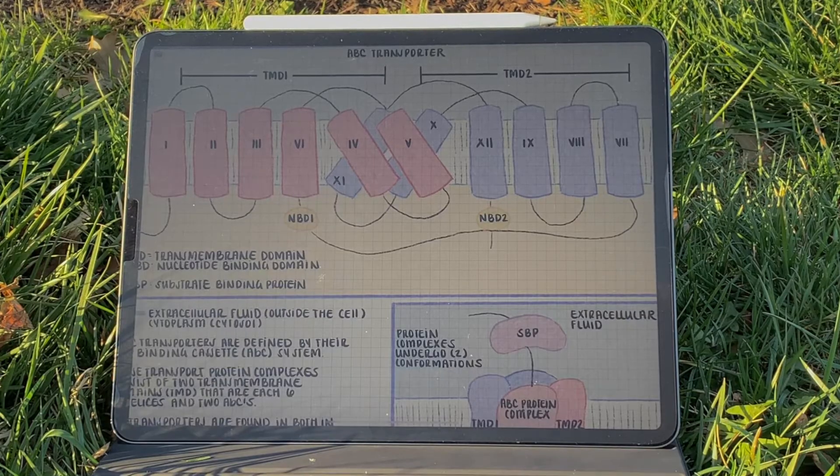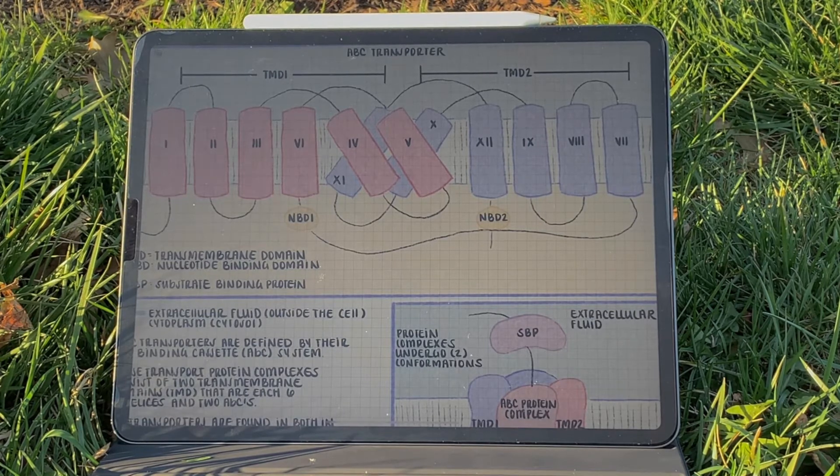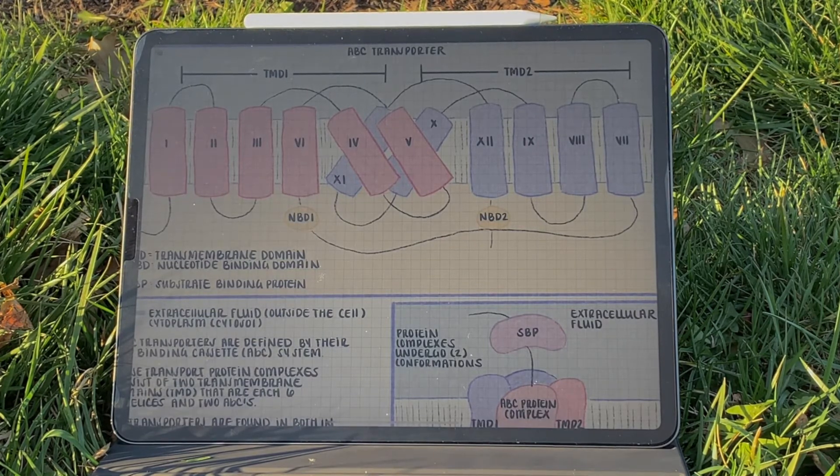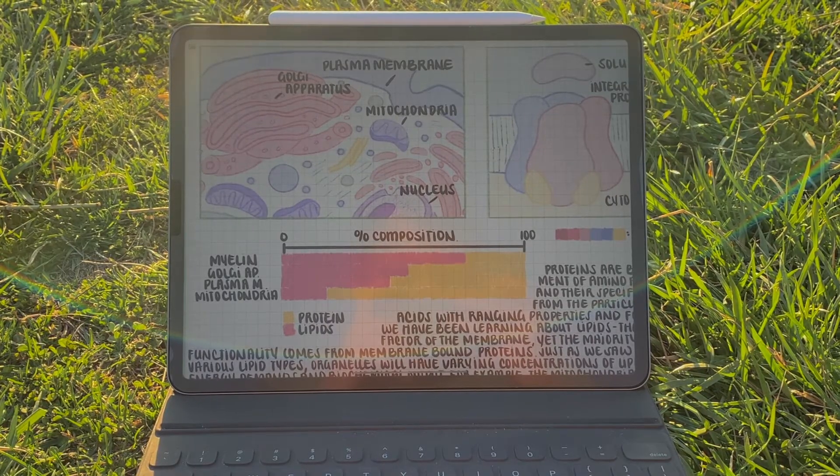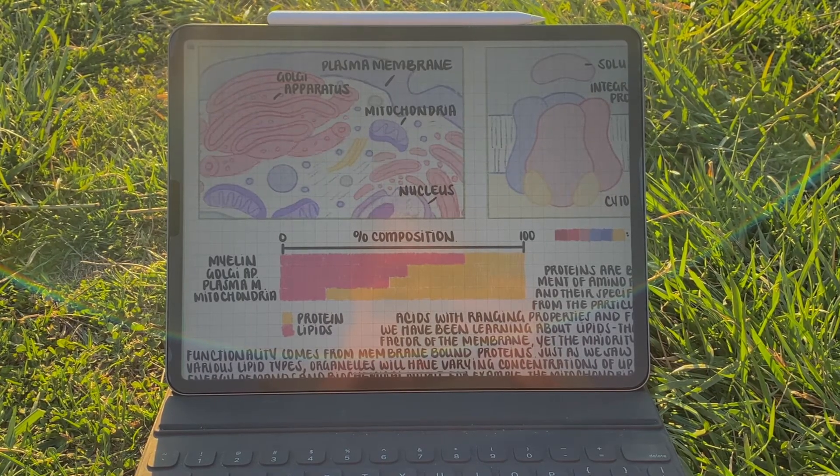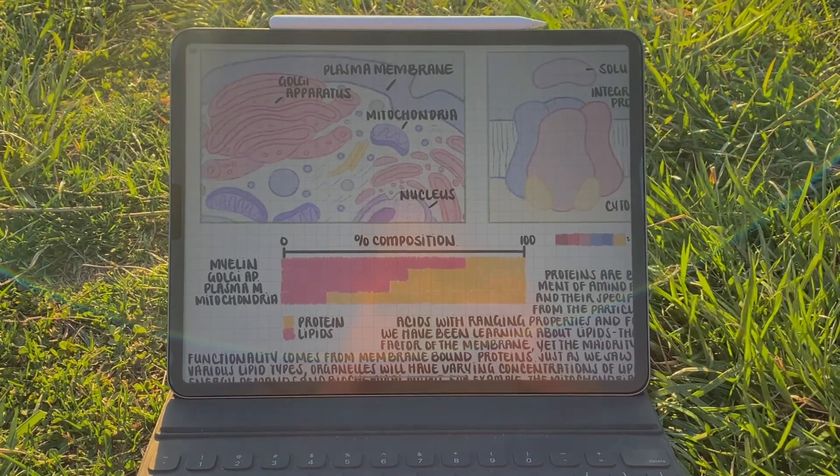Integral proteins have a range of structural components, with some having more than one domain transversing through the bilayer, taking roughly around 20 amino acids to cross the bilayer. These complexes are the only type of proteins that can interact with the environment on both sides of the bilayer.